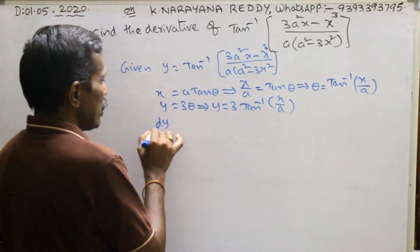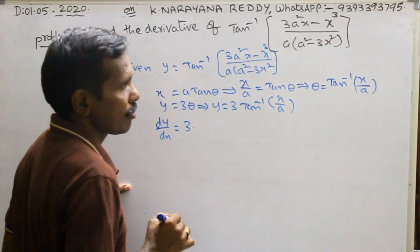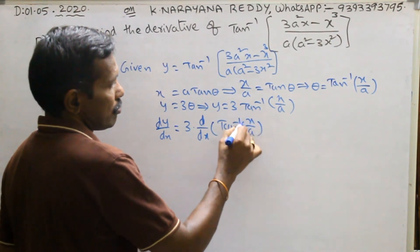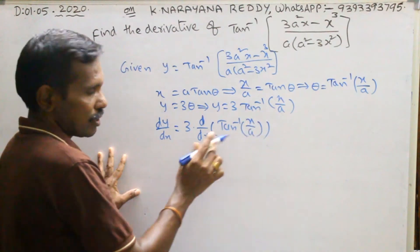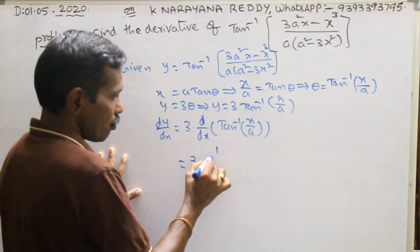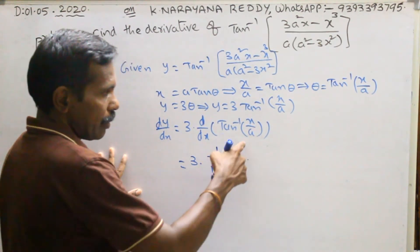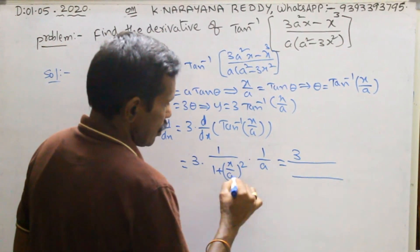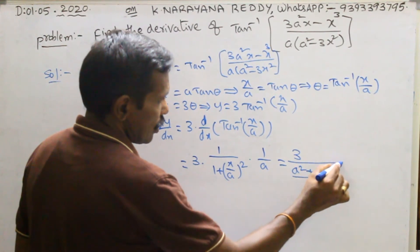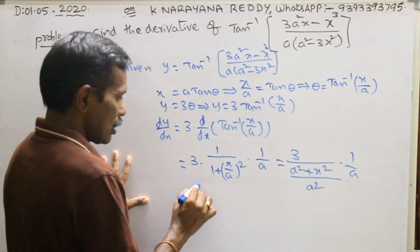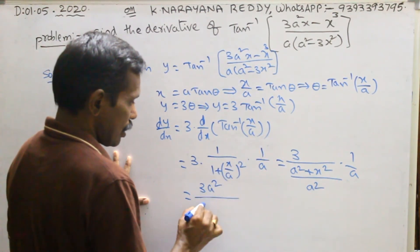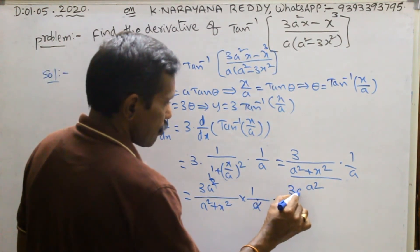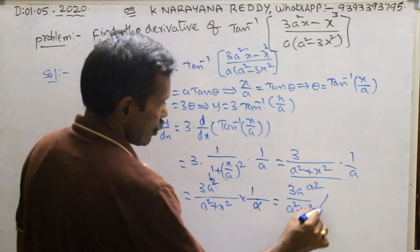Now differentiate: dy/dx equals 3 times d/dx of tan inverse(x/a). Using the formula, d/dx of tan inverse(x/a) = 1/(1 + x²/a²) times 1/a, which equals a/(a² + x²). So dy/dx = 3a/(a² + x²). That is the required answer.